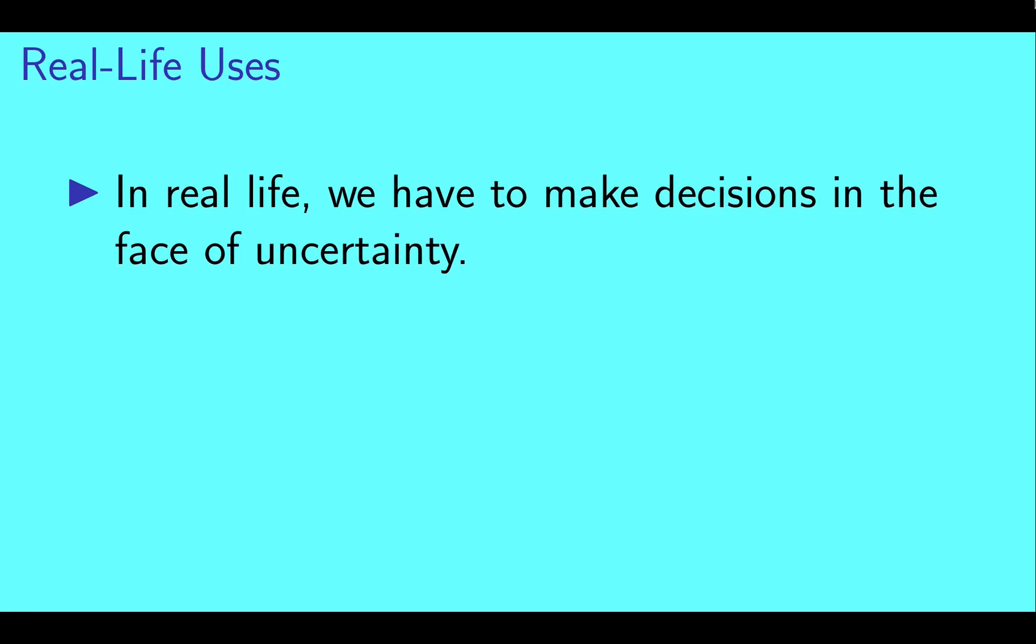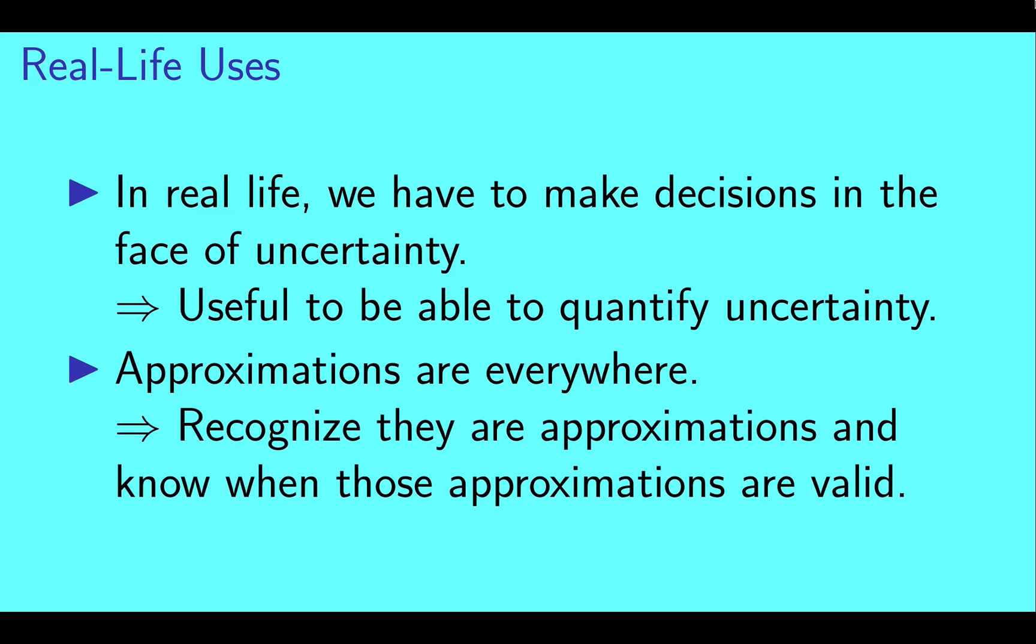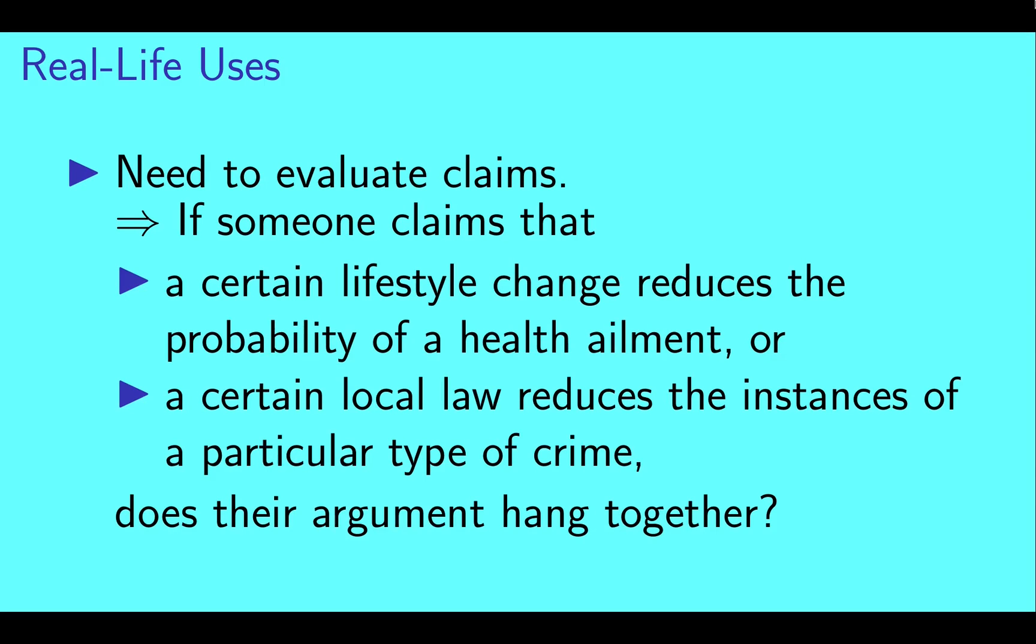Okay, next: real life uses. In real life, we have to make decisions in the face of uncertainty. It is useful to be able to quantify this uncertainty. Also, approximations are everywhere. It is useful to recognize that they are approximations and know when they are valid. We also find ourselves needing to evaluate claims. If someone claims that a certain lifestyle change reduces the probability of a certain health ailment, or if they claim that a certain local law reduces the instances of a particular type of crime, does their argument hang together?